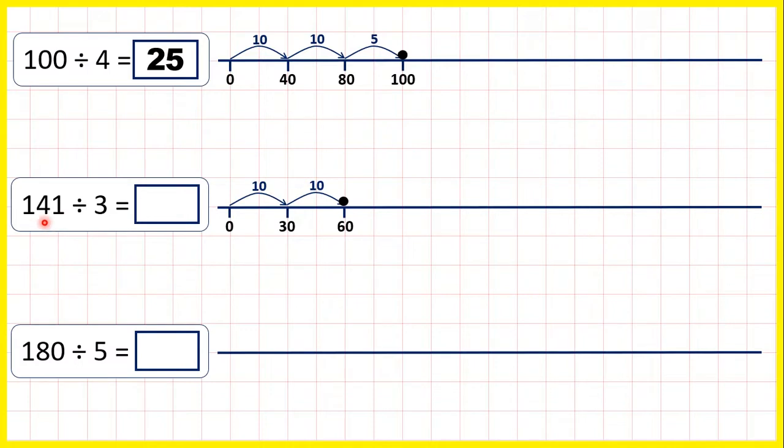But we're still not close to our dividend, so another 10 lots of 3. Another 30 takes us to 90. We're not there yet, so let's keep going. Another 10 lots of 3—90 plus another 30—takes us to 120.